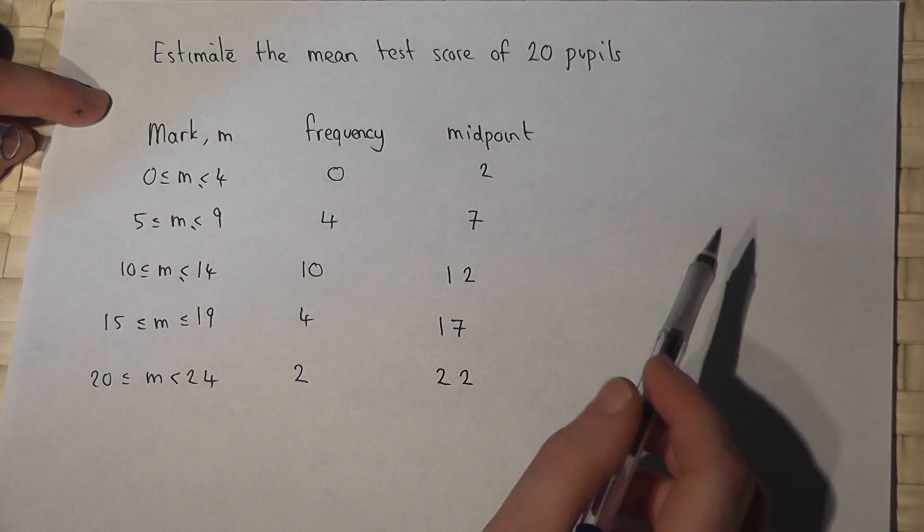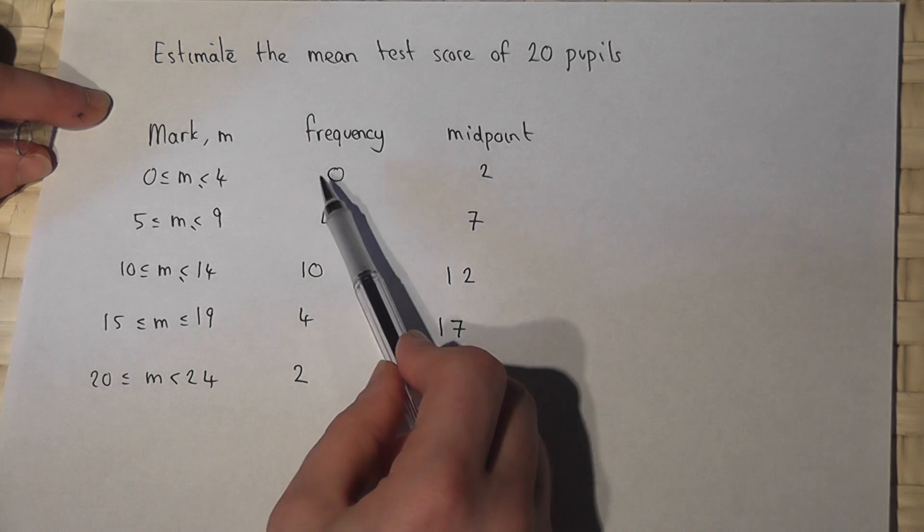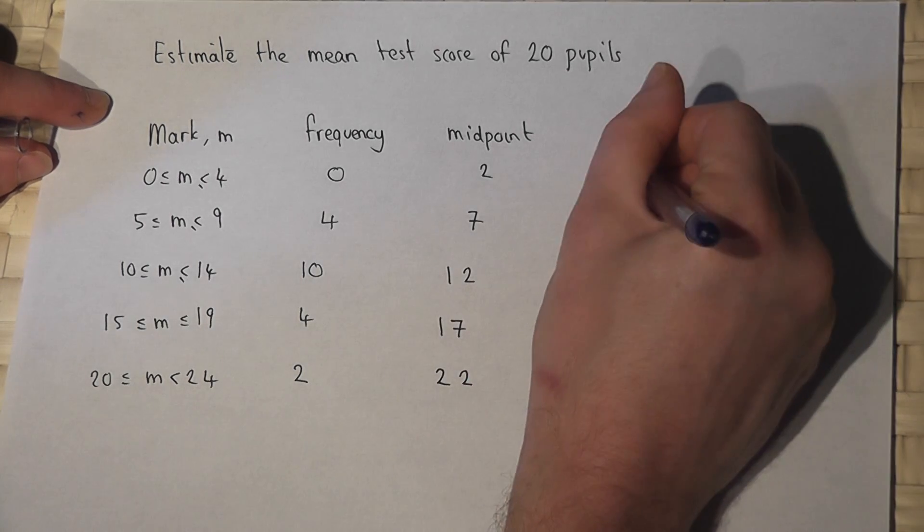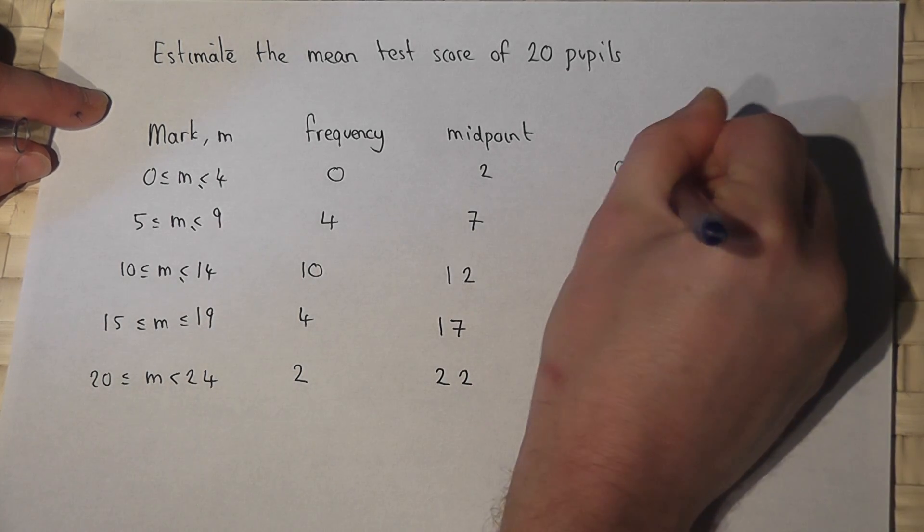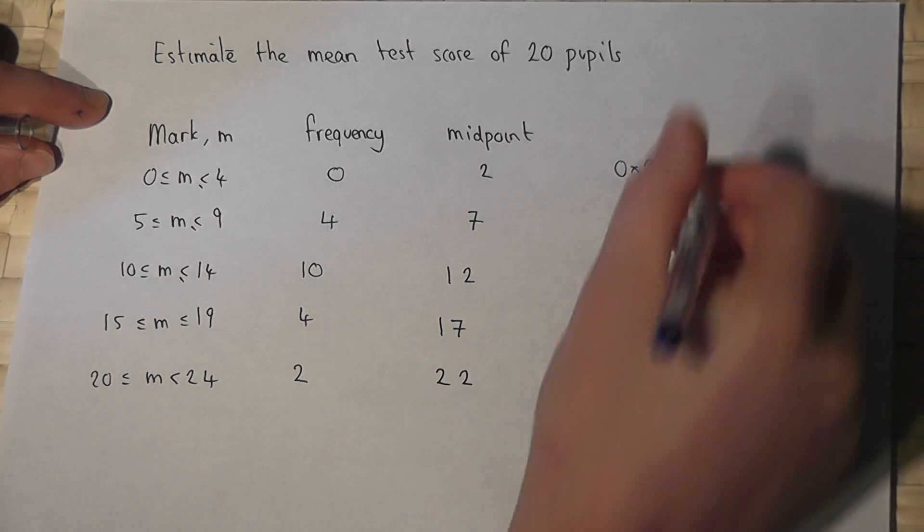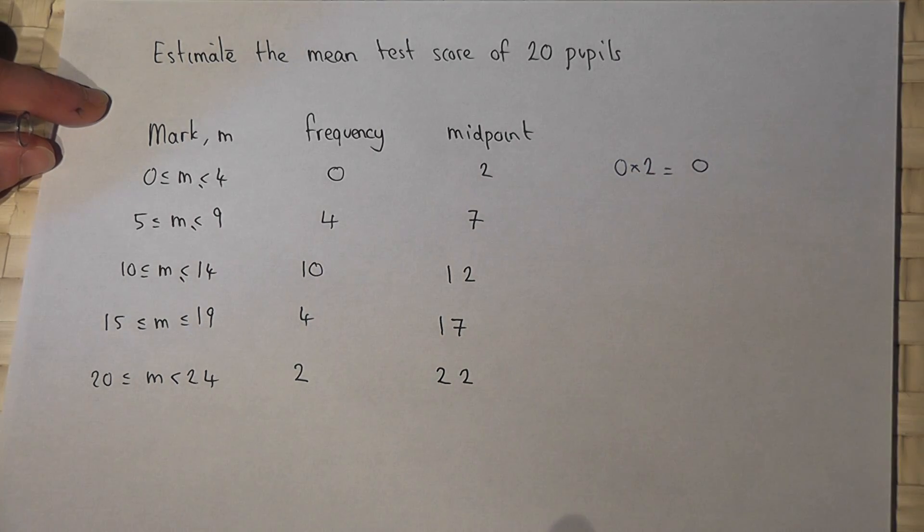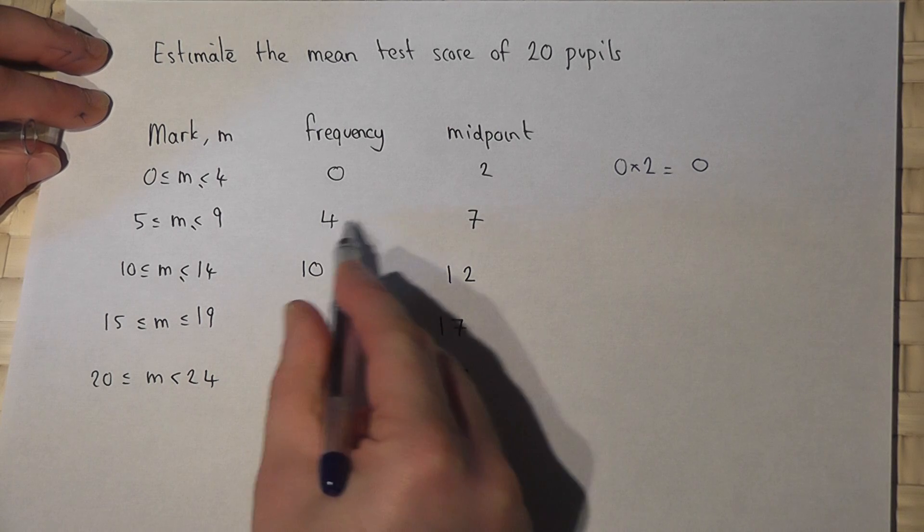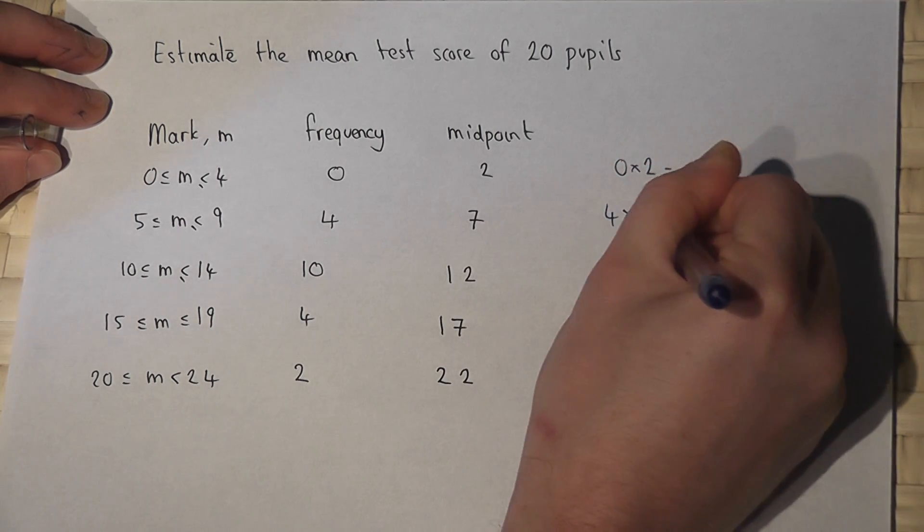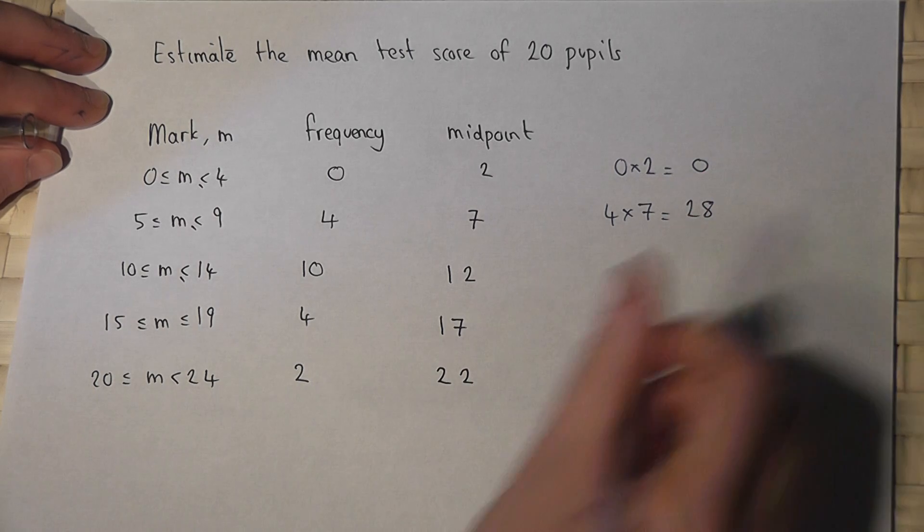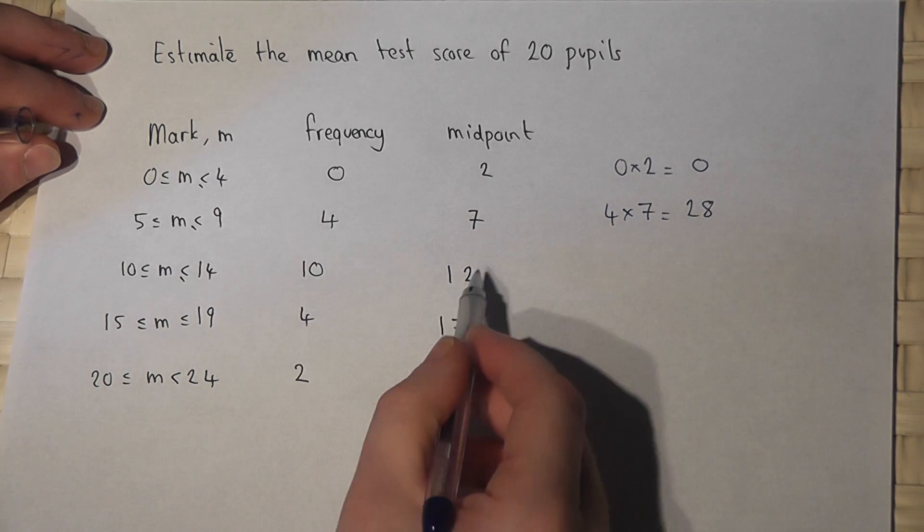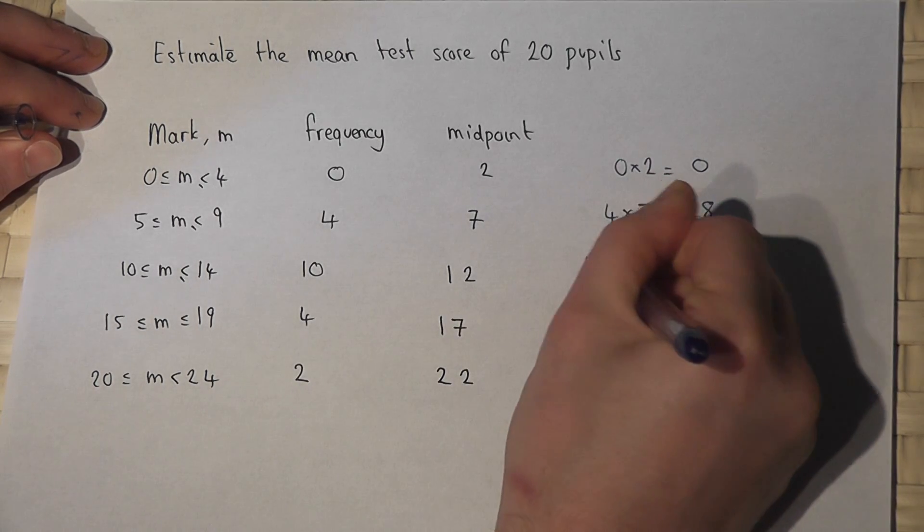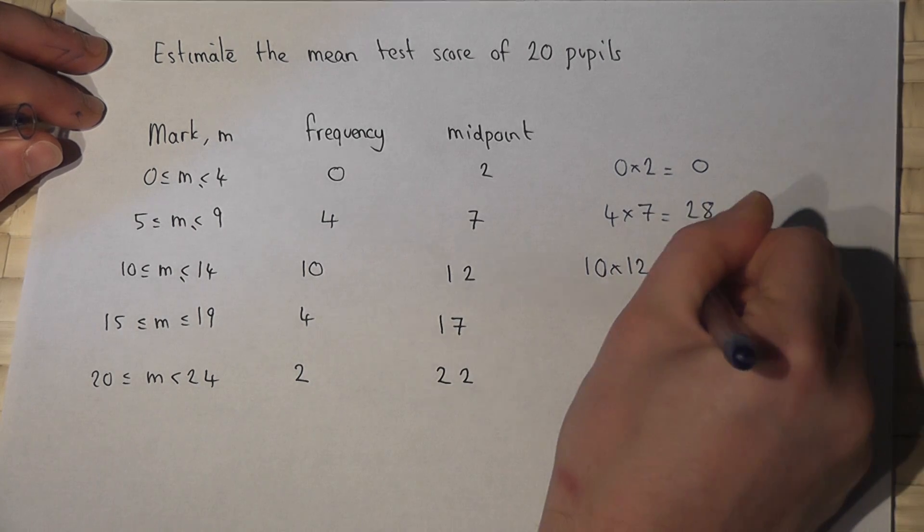This table shows me that there are no people who scored two, so that contributes nothing to the mean. But four people scored seven, so they contribute twenty-eight. Ten people scored twelve, so that contributes one hundred and twenty.